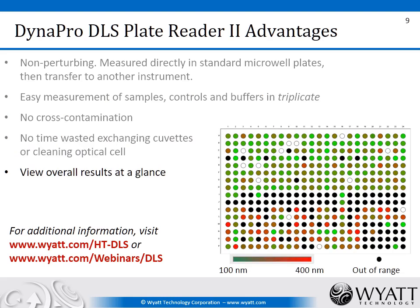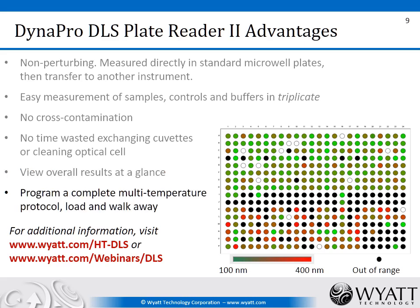You don't waste time exchanging cuvettes or cleaning the optical cell. Using the DYNAMICS software, the control software for the DynaPro plate reader, you can view results at a glance in a heat map, readily seeing which samples were appropriate for your measurements, which were out of range, which were aggregated, and so forth. You can also program a complete multi-temperature protocol which will ramp temperature, hold, and make measurements every hour as you like — walk away and come back when the measurement is done.